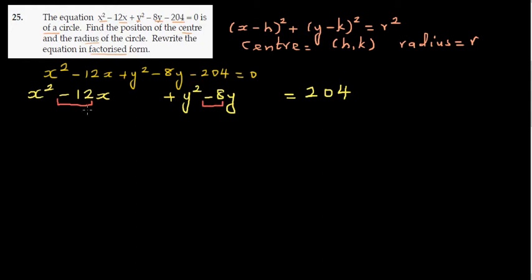Half of negative 12 is negative 6, and the square of negative 6 is 36. So we add 36 to both sides to complete the square for x. Half of negative 8 is negative 4, and the square of negative 4 is 16. So we add 16 to both sides to complete the square for y.